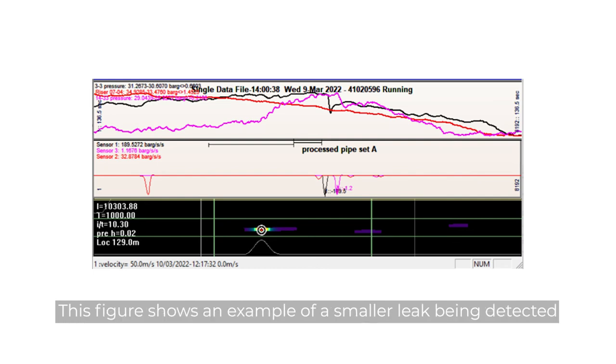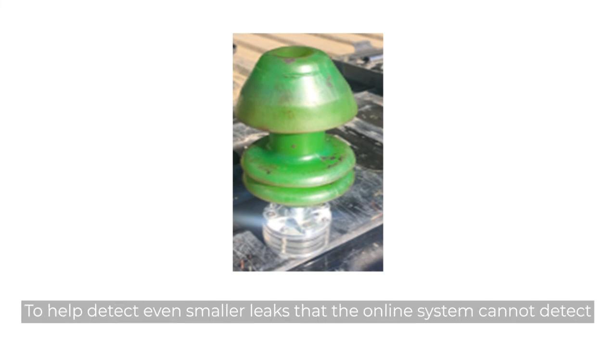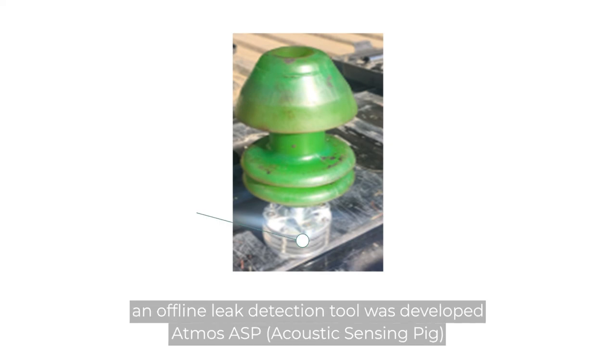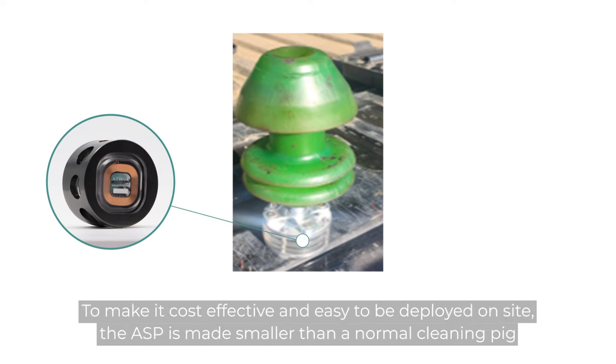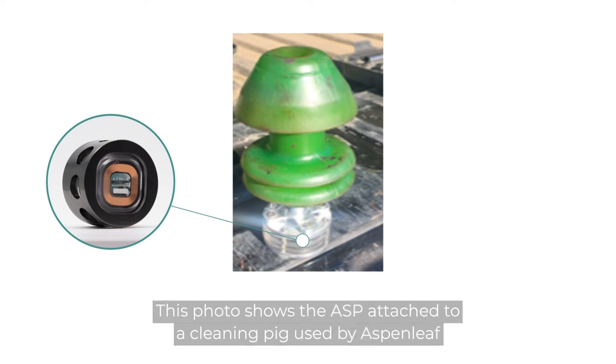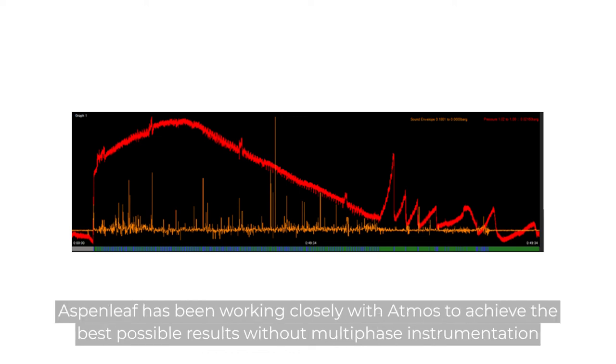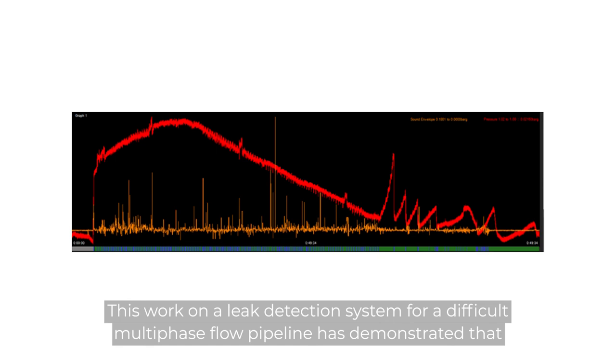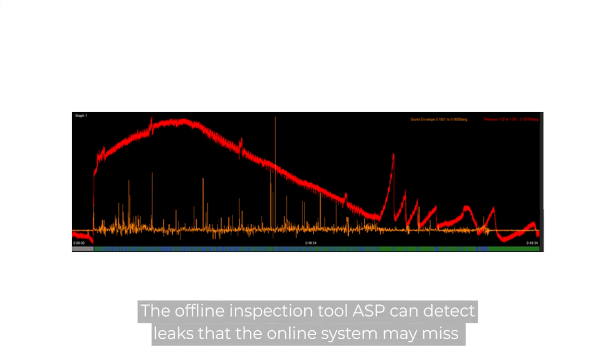For multi-phase pipelines, pigging is usually carried out regularly to clean the pipelines of debris and stagnant liquids. To help detect even smaller leaks that the online system cannot detect, an offline leak detection tool was developed: Atmos ASP, Acoustic Sensing Pig. To make it cost-effective and easy to deploy on-site, the ASP is made smaller than a normal cleaning pig. It can be attached to a cleaning pig before a routine pigging is carried out. This photo shows the ASP attached to a cleaning pig used by Aspen Leaf. This figure illustrates that no leak was detected in the section surveyed by the ASP. Aspen Leaf has been working closely with Atmos to achieve the best possible results without multi-phase instrumentation. This work has demonstrated that the real-time negative pressure wave system can detect leaks of a reasonable size for the river crossing section without false alarms, and the offline inspection tool ASP can detect leaks that the online system may miss.